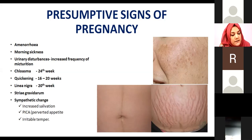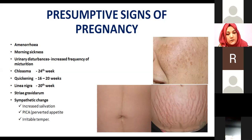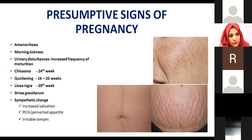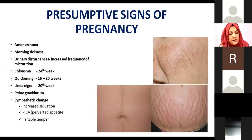Then there are urinary disturbances — increased frequency of urination. This happens as the pregnancy progresses because of the enlargement of the uterus due to the growth of the baby. The uterus presses down on the bladder, pressurizing it and resulting in increased urination. Again, this is not a definitive sign.